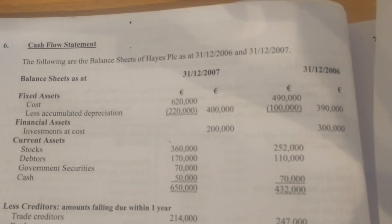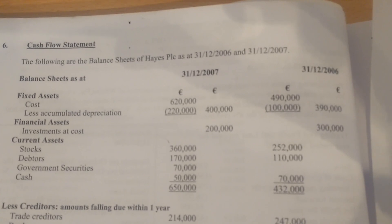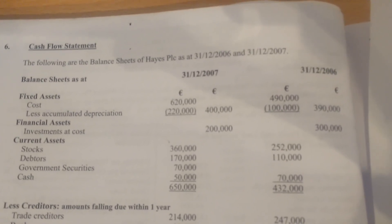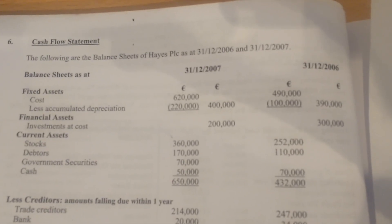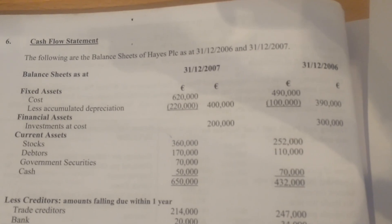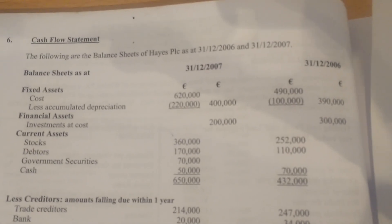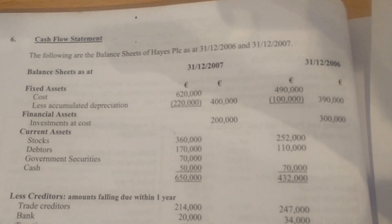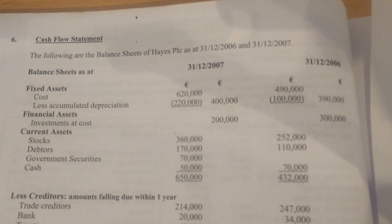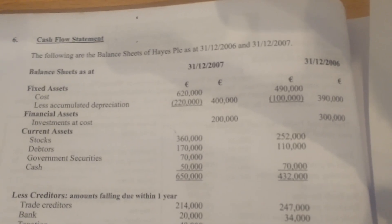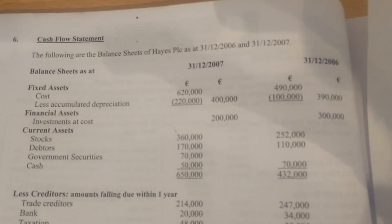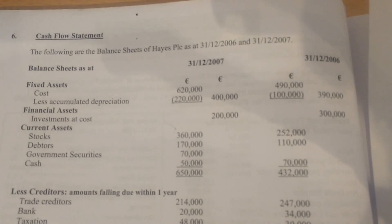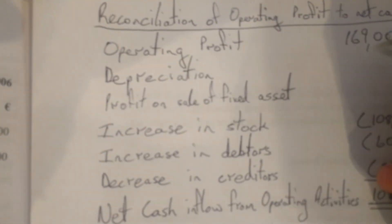We already know that there was 30,000 worth of depreciation removed. So in actual fact, accounting for that 30,000 that was removed, there was an actual increase of 150,000 — that's the 120,000 plus the 30,000. So depreciation of 150,000 made the 100,000 in 2006 go up to 250,000. But then because we disposed of that asset, it went from 250,000 back down to 220,000 — a reduction of 30,000. So we put in depreciation of 150,000.